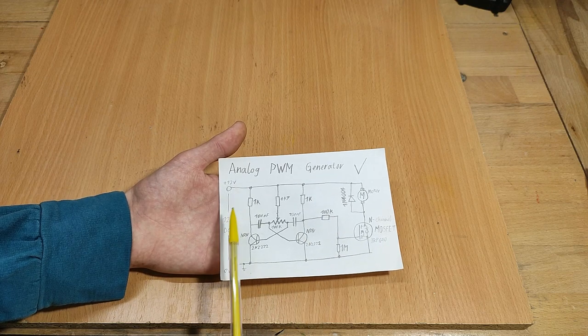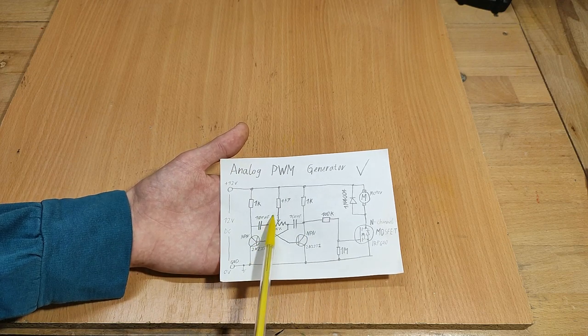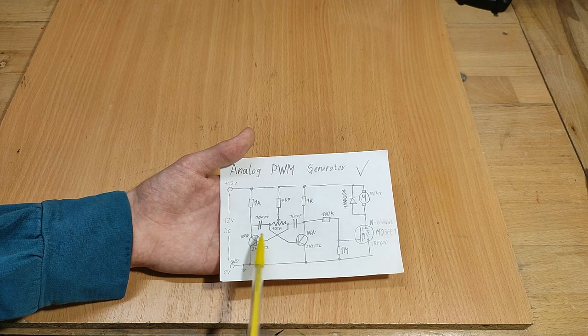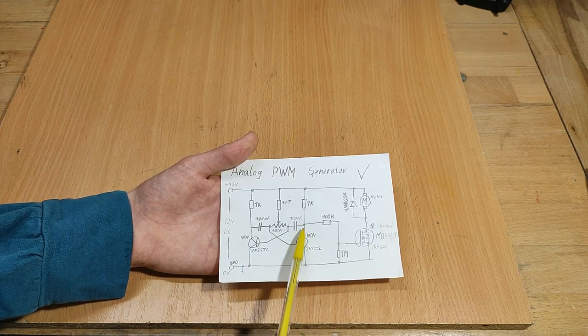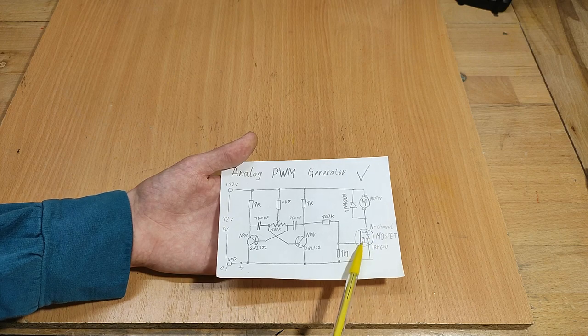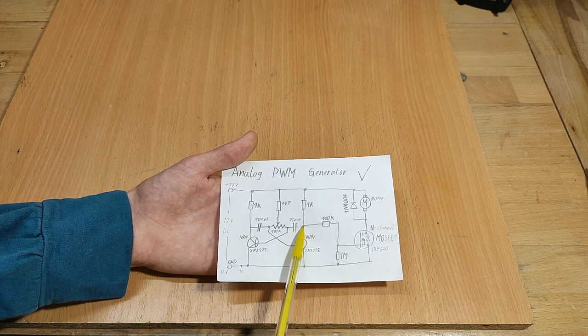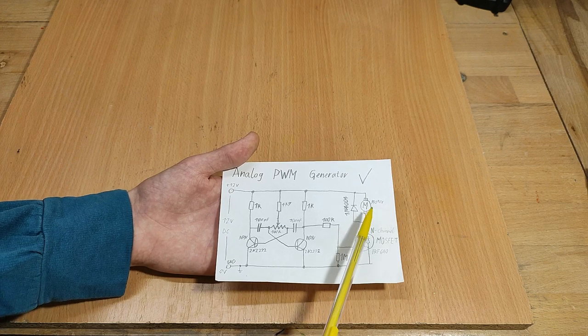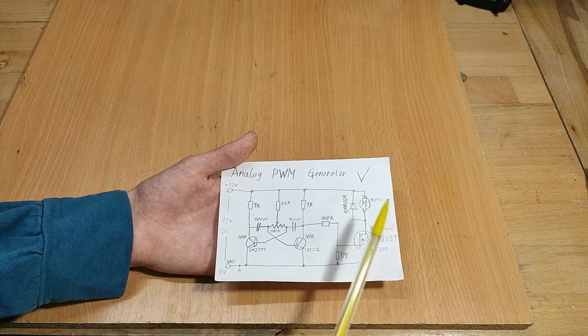The design I first came up with uses a simple astable multivibrator to generate a base frequency, with a potentiometer here to allow us to change the duty cycle of either of these transistors, and then we simply have a MOSFET over here, connected to the collector of the right transistor, taking the signal to switch our load.